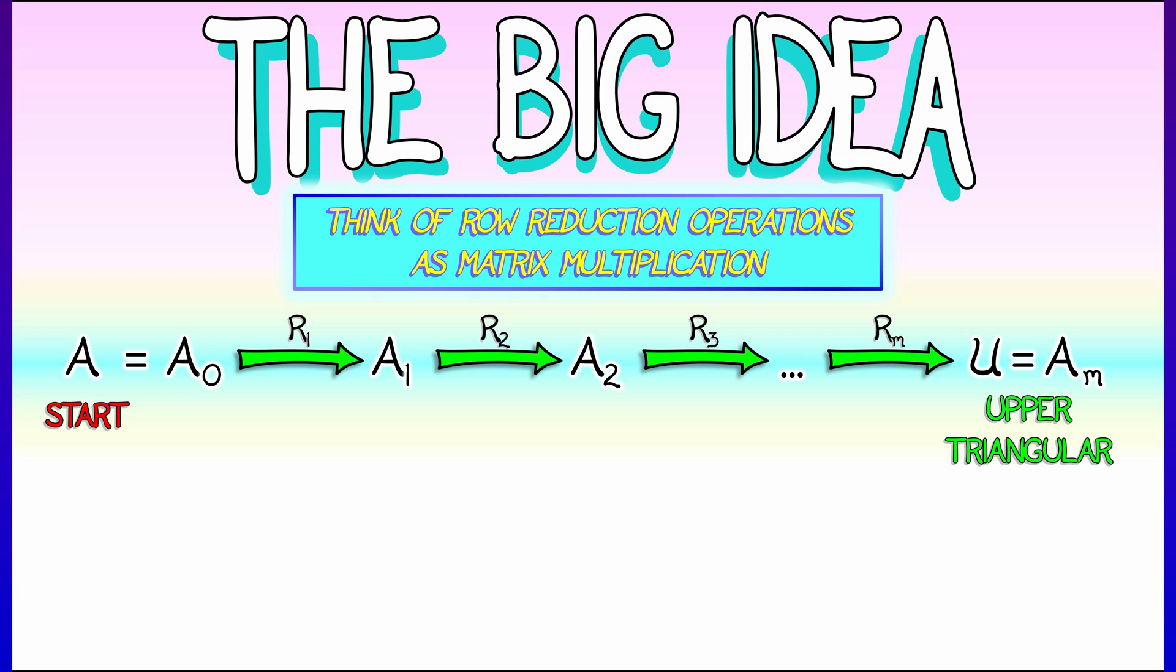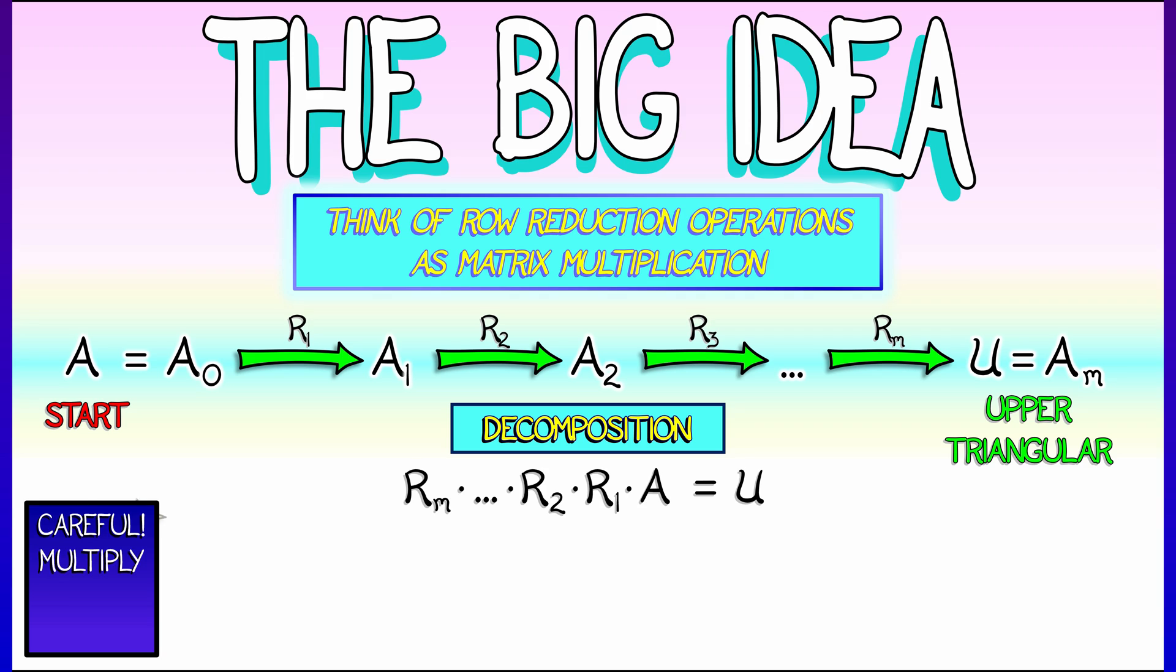Each step is one single row operation. But we're going to think of those row operations in terms of linear transformations and matrix multiplication, multiplying on the left as you go, in order to convert A into an upper triangular matrix.